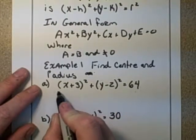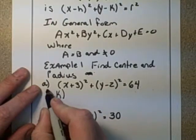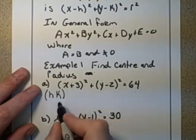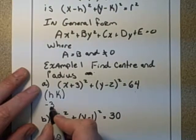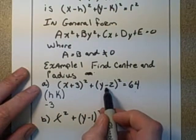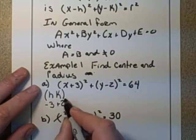In our case here, the center of the circle is h,k. The value of h is always the opposite of what's in the brackets here. So h is -3, and k, being with the y, is positive 2. So our center is (-3, 2).